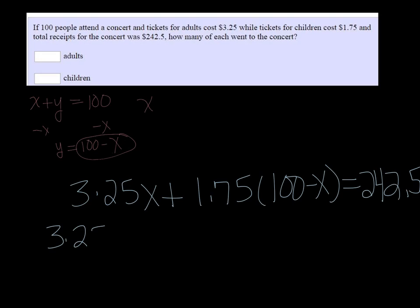So distributing, I get 3.25X plus 175 minus 1.75X equals $242.50. Combining like terms, 3.25 minus 1.75 is 1.50, so I have 1.5X plus 175 equals 242.5.